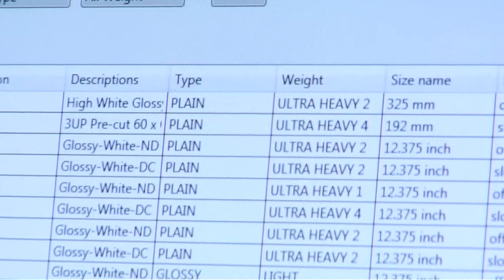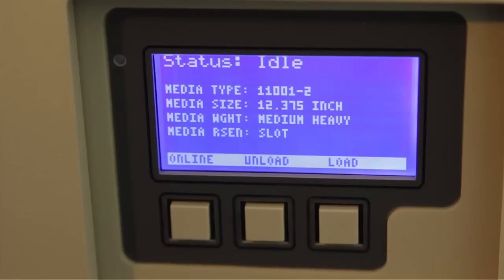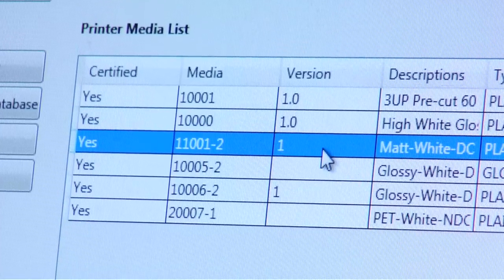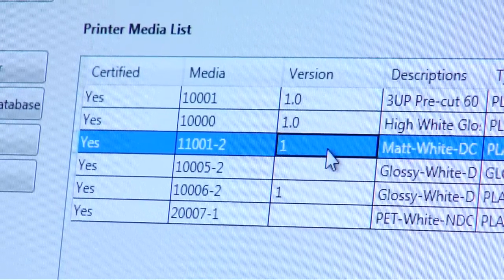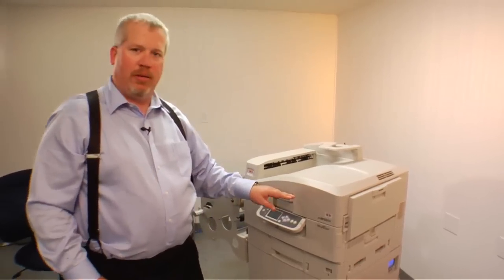The first step that we need to do is load it into the media manager itself so that the device recognizes what media is going into the machine. From that point, as we load the media on the control panel on the side, it's going to acknowledge that media. The same media that's called up in your media manager as well as on the control panel of the feeder itself are going to match one another. That's going to ensure that the speed and temperature is correct as we image the job through.